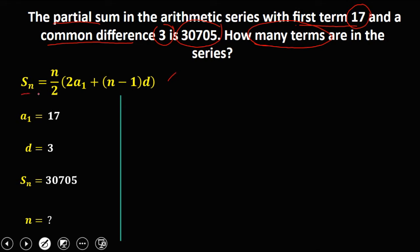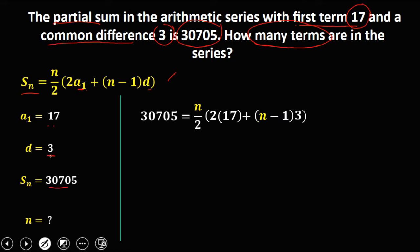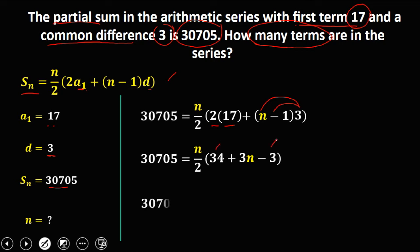We have s sub n equals 30,705, equal to n over 2 times 2 times a sub 1 — with a sub 1 being 17 — plus n minus 1 times d, where d is 3. Simplifying: 2 times 17 is 34. Distributing gives positive 3n minus 3. Combining 34 and negative 3 gives 31 plus 3n.